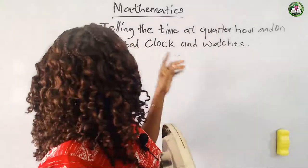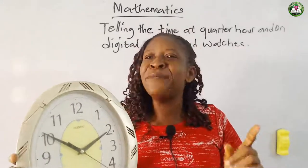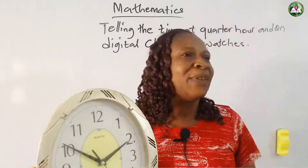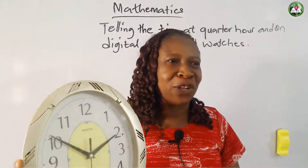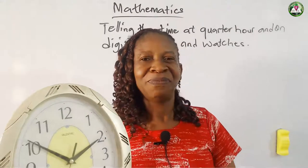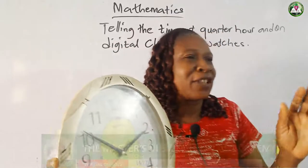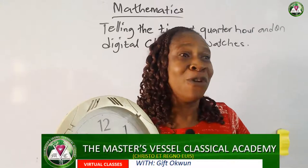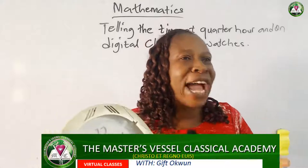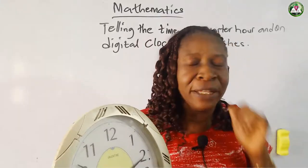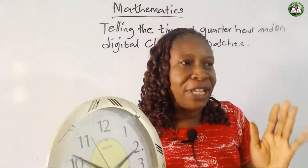Having known that sixty minutes make an hour — what did I say? Sixty minutes make an hour. Now, what do you mean by quarter? Quarter is when you divide something into four — you now have a quarter. Any number you divide into four, a part of it is now a quarter.